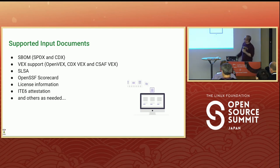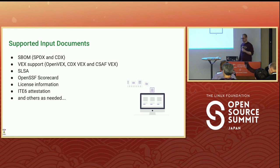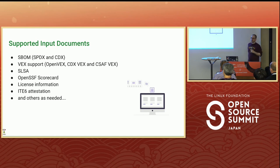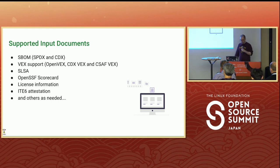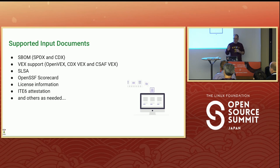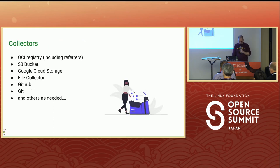What documents are supported today? We have SBOMs: SPDX and CycloneDX. VEX support: Open VEX (part of OpenSSF), CycloneDX VEX, and CSAF VEX. We support SLSA, OpenSSF Scorecard, and license information — so whether a license is GPL or MIT and so on. We're building out ways to query that information to detect license mismatches — for example, something claiming to be MIT but depending on something with a much more restrictive license. We also support arbitrary in-toto attestations and plan to support more. If you want other documents in GUAC, feel free to bring those up.